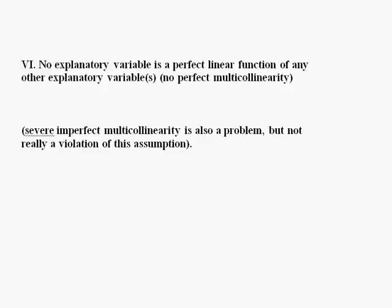All right, welcome back to our final lecture on the assumptions of the classical linear regression model. We're going to talk about assumption six, which is that no explanatory variable is a perfect linear function of any other explanatory variables. If you do have this problem, we call it perfect multicollinearity, and the assumption can be shortened as saying we're assuming you don't have perfect multicollinearity.